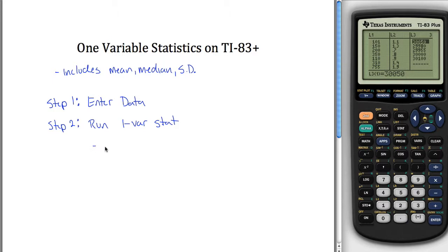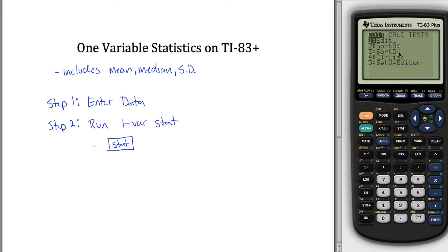The way you do that is you first hit the stat button. It doesn't matter if you're in another function like these lists here, just hit stat. It'll get out of there and enter what you need. That'll pull up something like this. What you want to do is it defaults you over here to the edit menu, the edit column. We want to go over to the calc column.